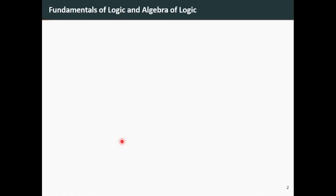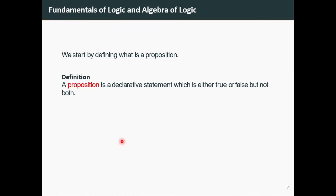We start by defining what is a proposition. Basically, a proposition is any declarative statement that is either true or false, but not both. In case the proposition is true, we give a truth value of one; other books use the symbol T.